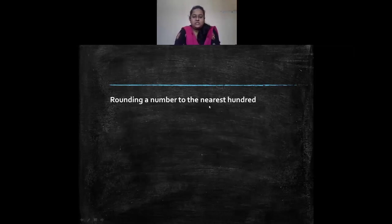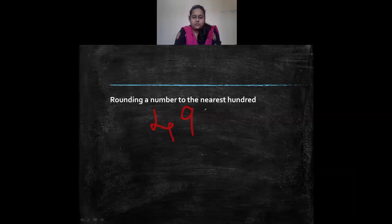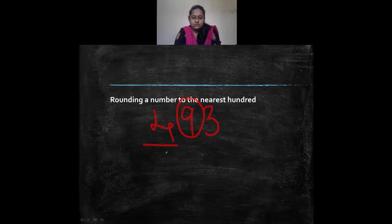Now, rounding a number to the nearest 100. For the number 493, we are told to round to the nearest 100. The hundreds place is 4, so we check the digit to the right of the hundreds place — the tens place. The tens digit is 9, which is greater than 5. So we add 1 to 4, making it 5, and all other digits become 0. Therefore, 493 is rounded up to 500.